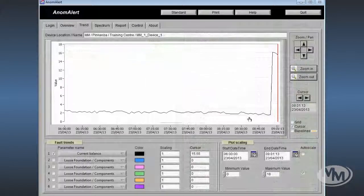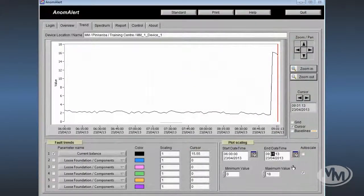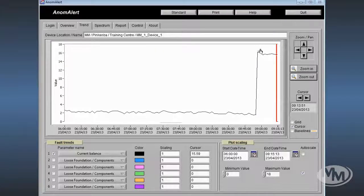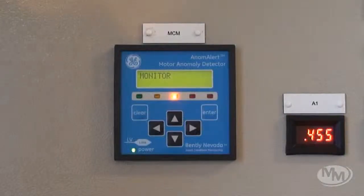From this page, the trending for the appropriate alarms can be directly accessed. By double clicking on the watch criteria, it takes us to a trending page showing the current balance values. It can be seen that by introducing the fault on the machine, we have caused a large rise in the current imbalance. This has been detected by the Anomalert unit.